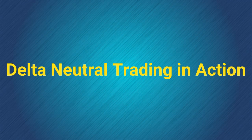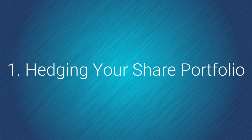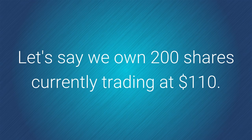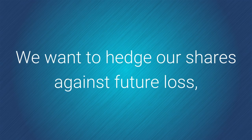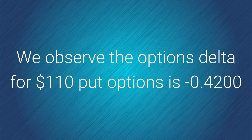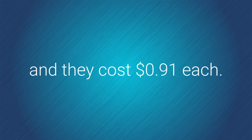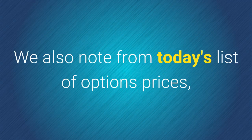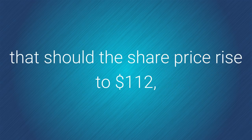Now let's look at delta neutral trading in action. The first way it can be used is when hedging your share portfolio. Let's say we own 200 shares, which are currently trading at $110. We want to hedge our shares against future loss, but also in such a way that we can profit from a rise in share price as well. We observe that the options delta for $110 put options is negative 0.42, and they cost 91 cents each.